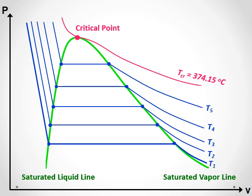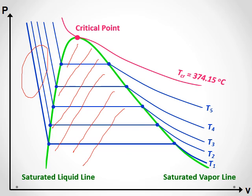The whole domain can be divided into three regions by these two lines. The region to the left of the saturated liquid line is called the subcooled liquid region. The region under the dome is called the saturated liquid vapor region. And the region to the right of the saturated vapor line is called the superheated vapor region.